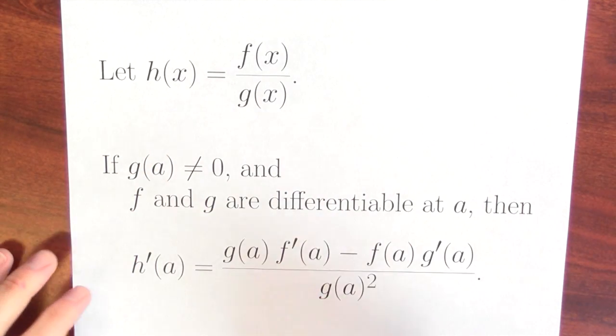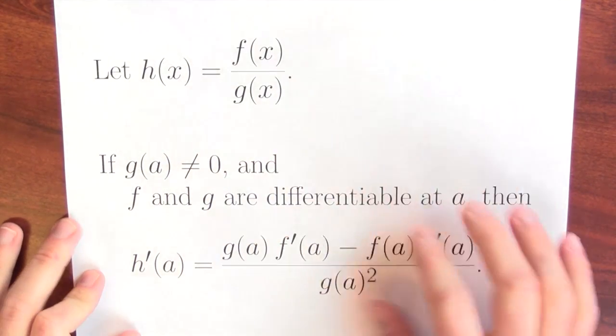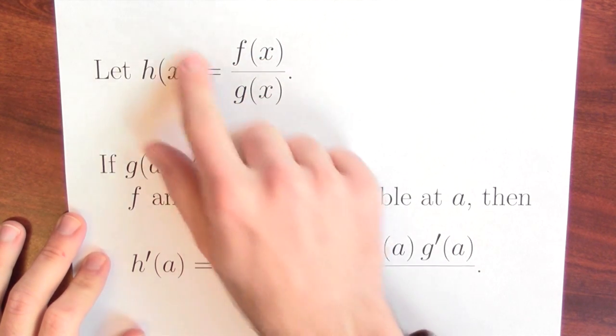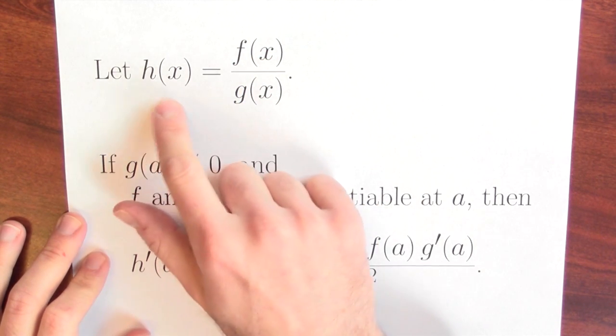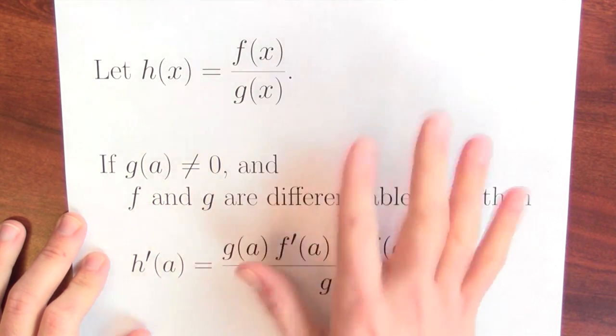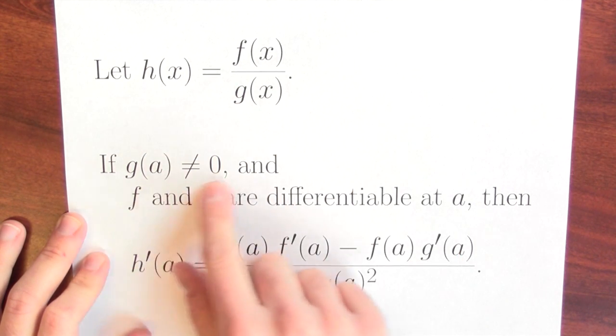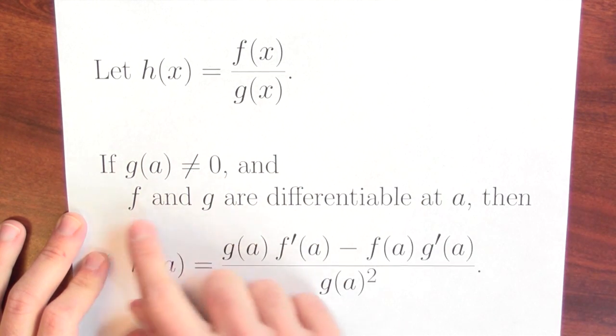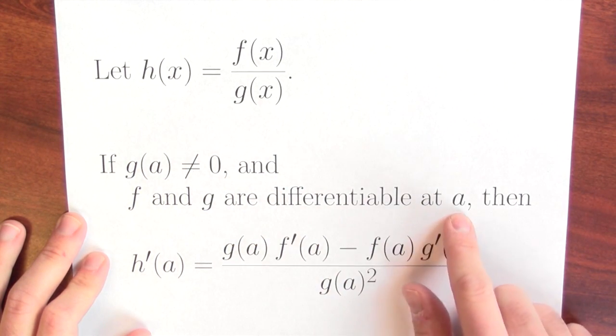Here's the quotient rule. To say this really precisely, let's suppose I got two functions, f and g, and then I define a new function that I'm just going to call h for now. h of x is this quotient, f of x over g of x. Now, I also want to make sure that the denominator isn't 0 at the point a, so it makes sense to evaluate this function at the point a, and I want to assume that f and g are differentiable at the point a.